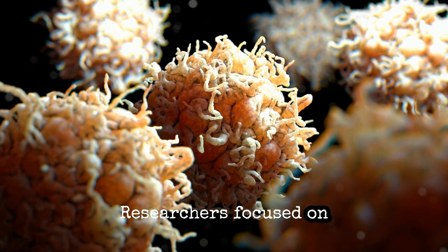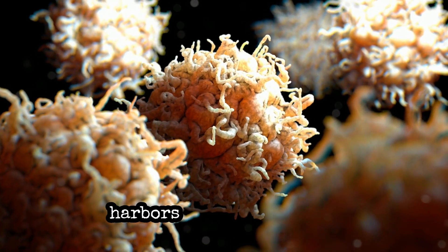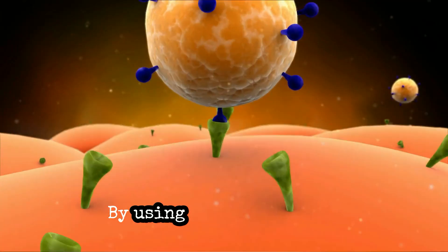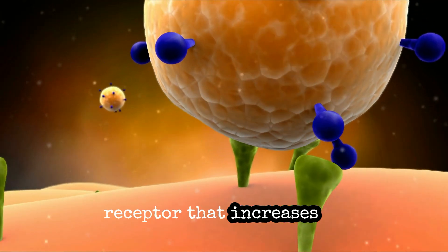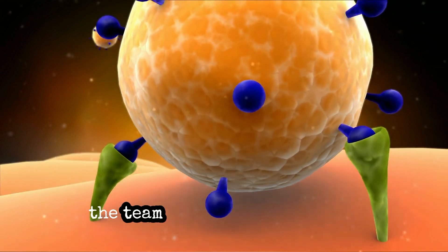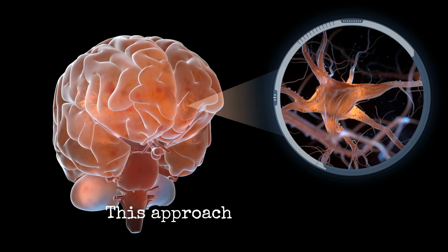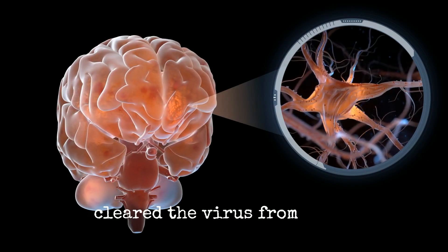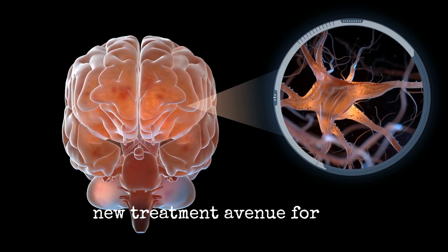Researchers focused on macrophages, a type of white blood cell that harbors HIV in the brain. By using a small molecule inhibitor to block a receptor that increases in HIV-infected macrophages, the team successfully reduced the viral load in the brain. This approach essentially cleared the virus from brain tissue, providing a potential new treatment avenue for HIV.